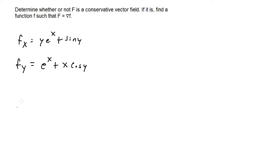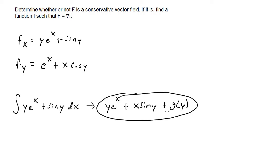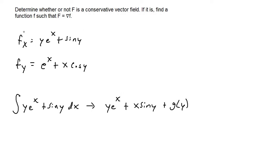Now whenever we integrate with respect to x, we add g of y as the constant of integration instead of a plain constant c, because when we partially differentiate g of y with respect to x it becomes zero, recovering the original expression. So f equals y times e to the x plus x times sine of y plus g of y. The next step is to partially differentiate this with respect to y, giving e to the x plus x cosine y plus g prime of y.